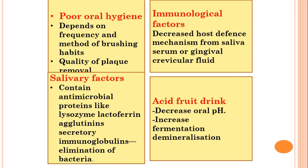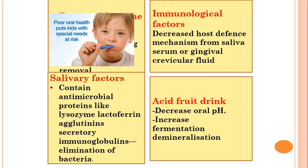Poor oral hygiene depends on the frequency and method of brushing habits and quality of plaque removal. Immunological factors include decreased host defense mechanisms from saliva, serum, or gingival crevicular fluid. Salivary factors contain antimicrobial proteins like lysozyme, lactoferrin, agglutinin, and secretory immunoglobulins, which all help in the elimination of bacteria. If these are compromised, the child is more prone to early childhood caries.